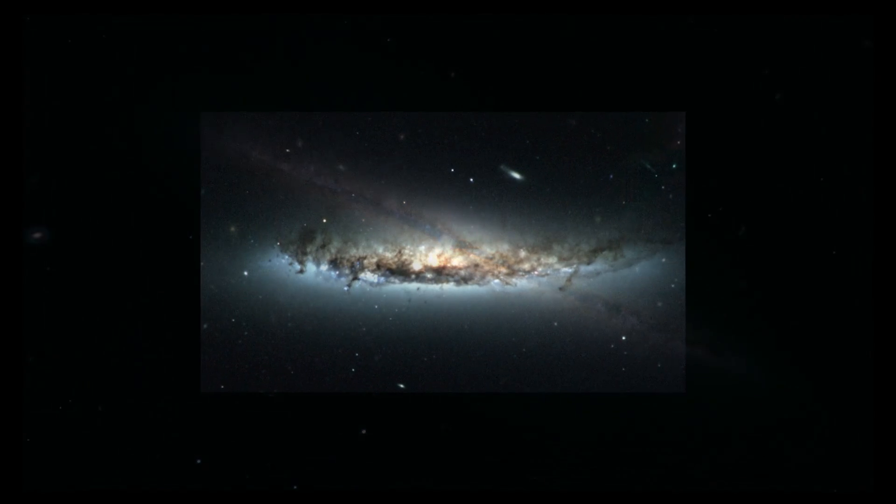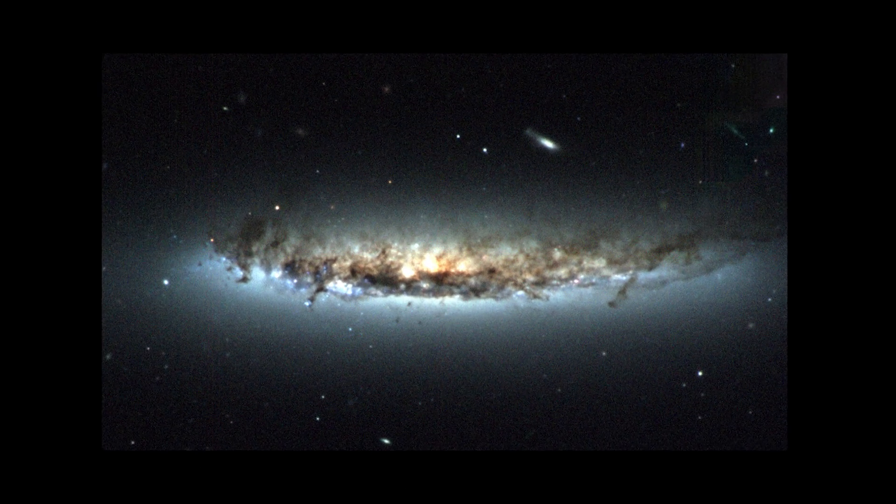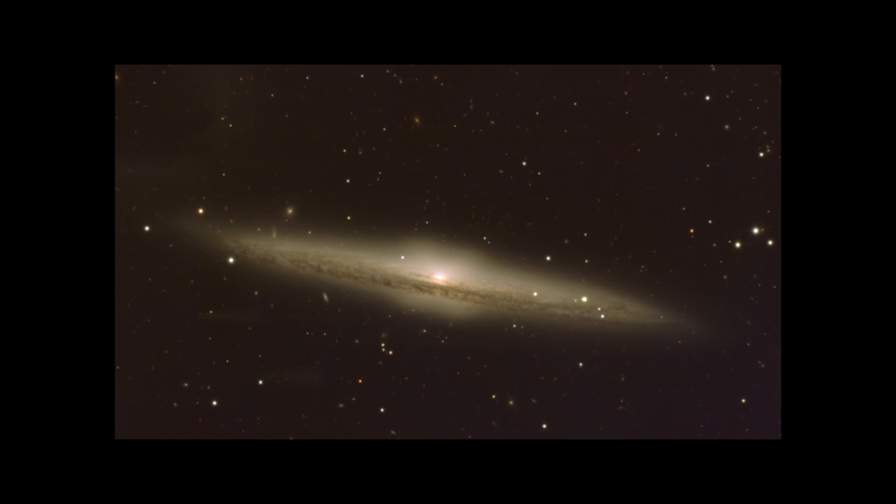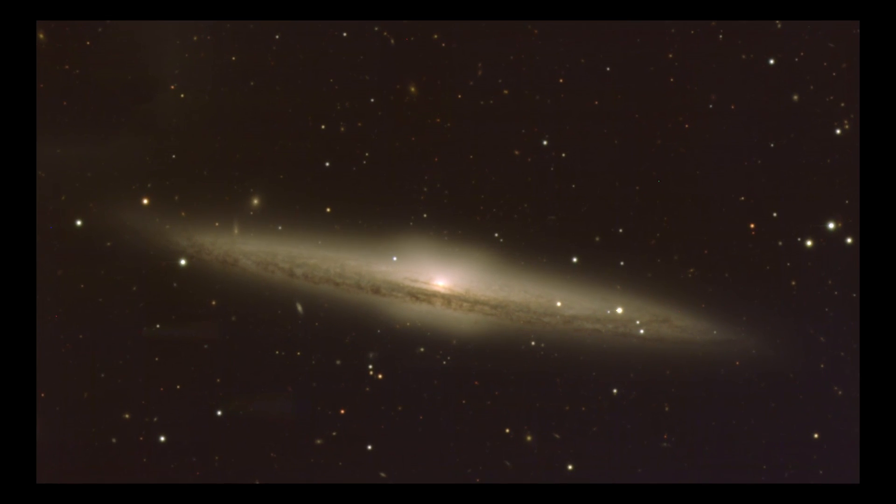Each of these spiral galaxies are surrounded by a halo of stars and globular clusters. Many of the tiny bright objects seen in the halo of these galaxies are actually globular clusters.